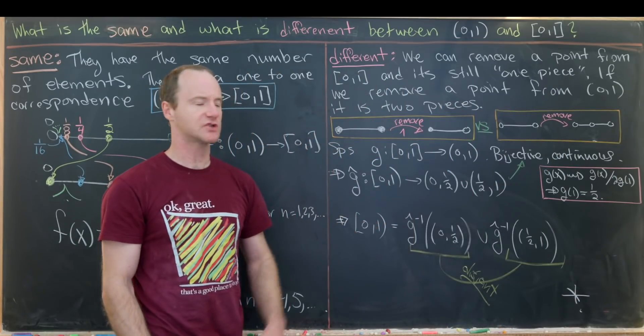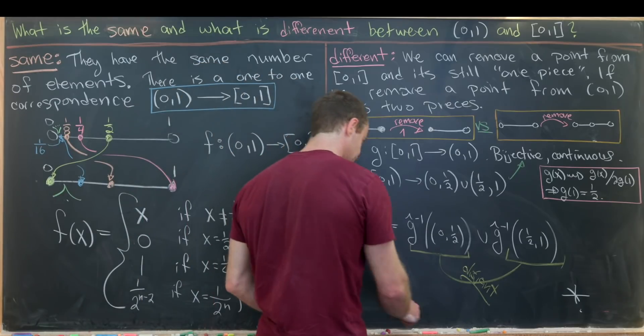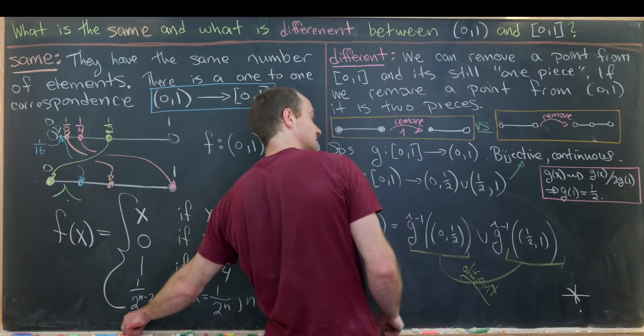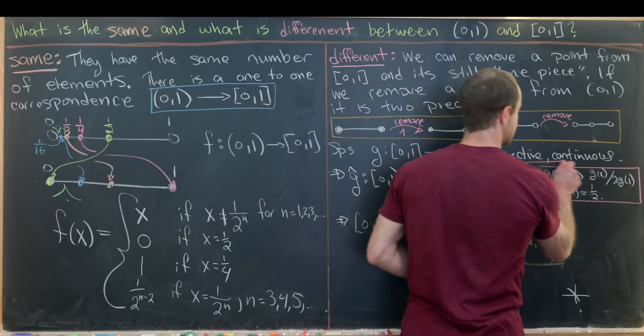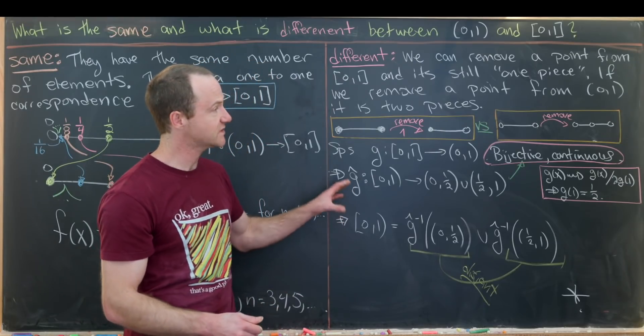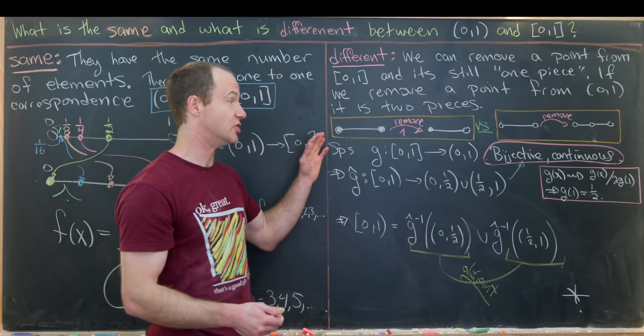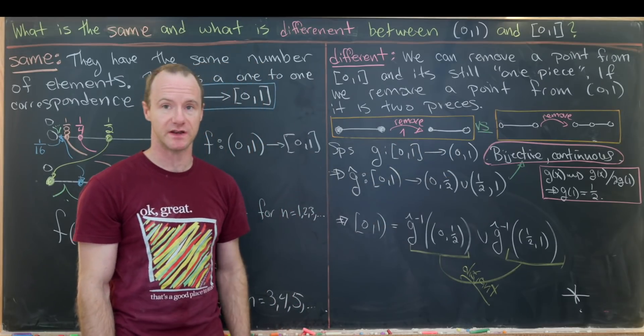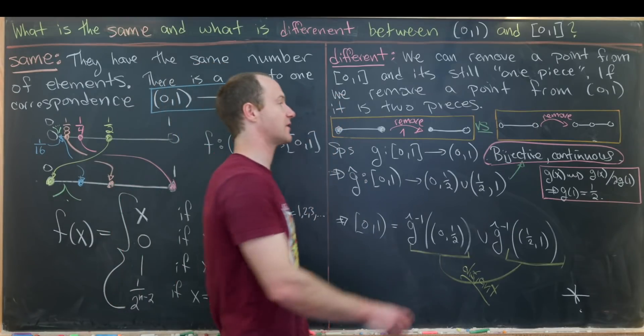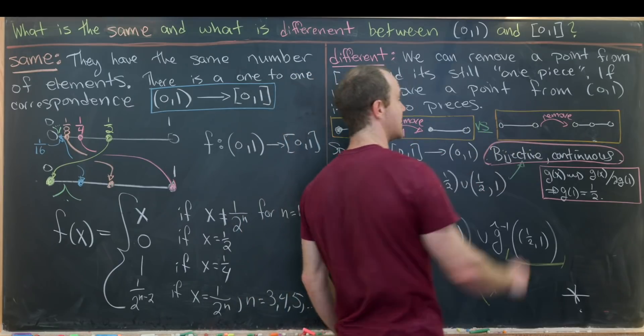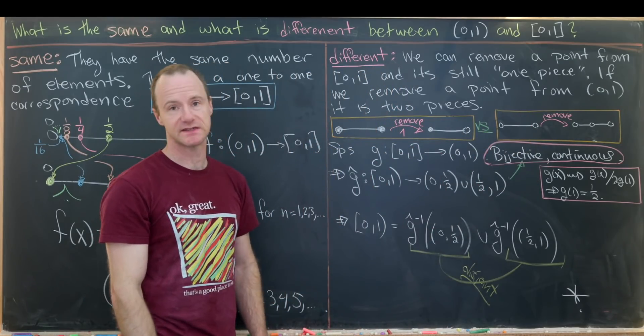But what did we contradict? Well, we contradicted this possibility of finding a simultaneously bijective and continuous function g from [0,1] to (0,1). So that means there is, in fact, no bijective continuous function from this closed interval to this open interval. So, again, that's a careful way of saying that the removal of this single point over here produces a connected set, whereas over here it forces a separated set.